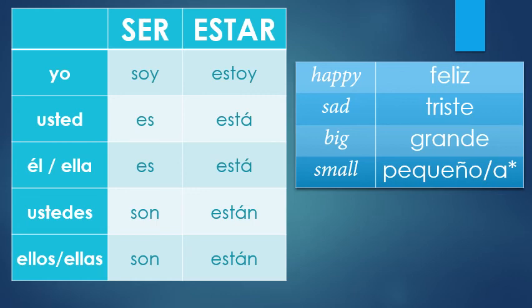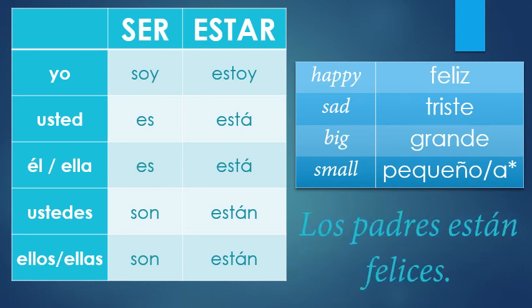Let's get back to practicing. Let's say 'the parents are happy.' How do you say parents? Los padres. Happy — do you use ser or estar? Estar. So they están, right? Feliz. Los padres están felices. The adjectives have to match the noun in number and gender. The Z in Spanish turned into a C — don't worry about that, that's a spelling thing you can pick up later — but you need the S. Los padres están felices.